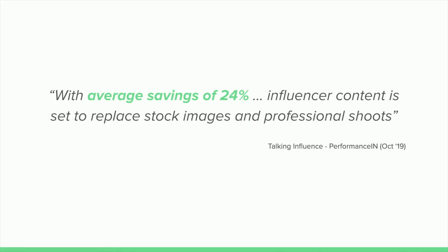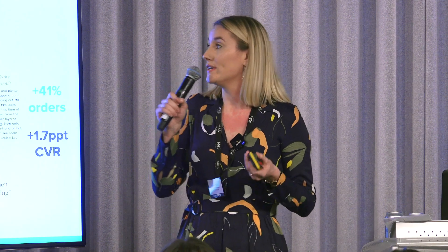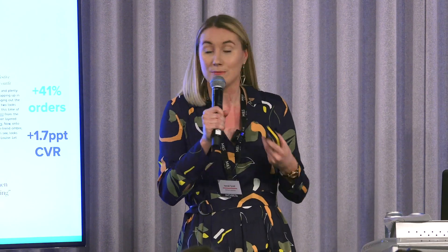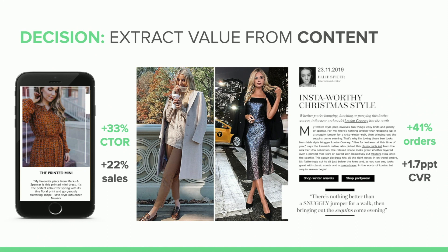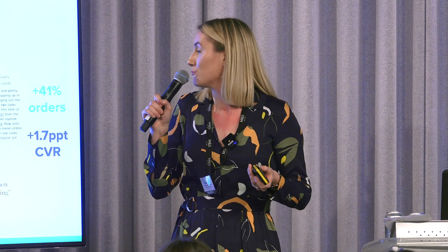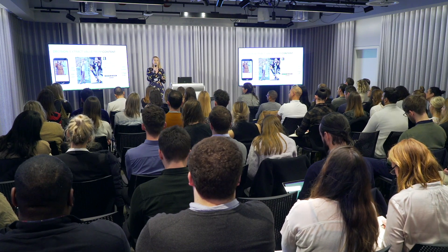With an average savings of 24%, Talking Influence projects that influencer content is set to replace stock images and professional shoots. This is something we already do across M&S. For as long as we've been working with influencers in international, we've been repurposing that content as much as we possibly can. We see value in the content itself — something a lot of brands overlook. We've extensively A/B tested emails using brand content versus influencer content, and we've seen average increases in click-to-open rate of 33% and an increase in sales of up to 22%. With editorial content, we've seen influencer content outperform brand content at plus 41% of orders and plus 1.7 percentage points conversion rate.